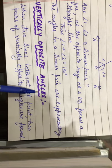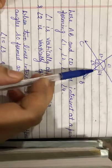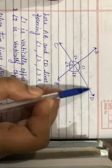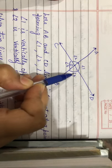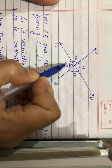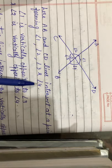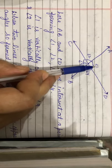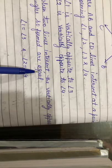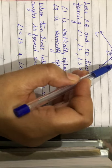Next is vertically opposite angles. When two lines intersect at a point, two pairs of vertically opposite angles are formed. Here AB and CD are two intersecting lines. When they intersect at a common point we get four angles: 1, 2, 3, and 4. Angles 1 and 3 are vertically opposite, and angles 2 and 4 are vertically opposite. The vertically opposite angles so formed are always equal — so angle 1 equals angle 3 and angle 2 equals angle 4.